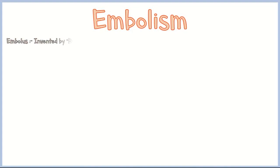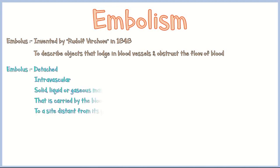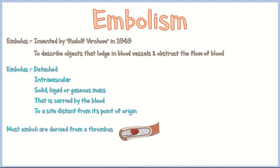The word embolus was first coined by Rudolf Virchow in 1848 to describe objects that lodge in blood vessels and obstruct the flow of blood. An embolus can be defined as a detached, intravascular, solid, liquid, or gaseous mass that is carried by the blood to a site distant from its point of origin. It is important to keep in mind that most emboli are derived from a thrombus somewhere in the vasculature, hence the name thromboembolism.